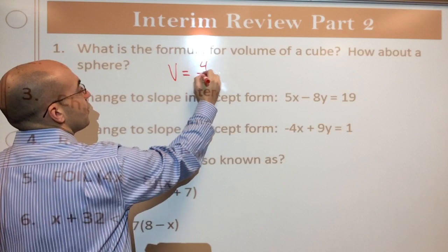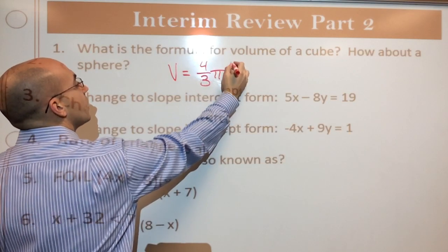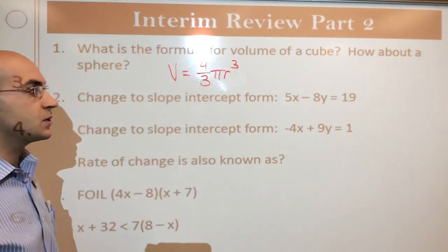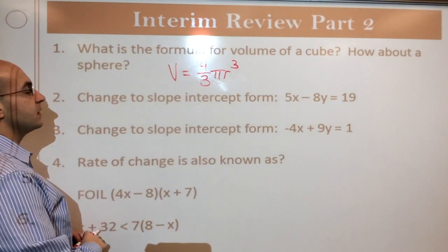For a sphere, it's four-thirds, right? It's that weird one, pi r to the third power. Okay, so it's the weird one up there. Volume of a cube, volume of a sphere, done.